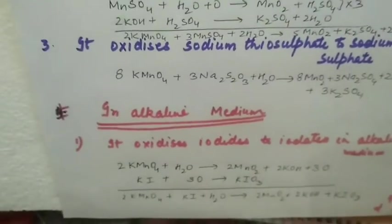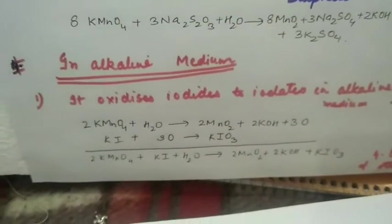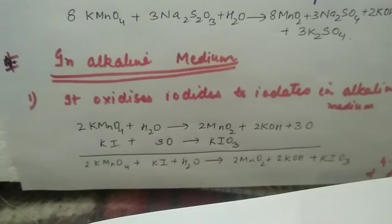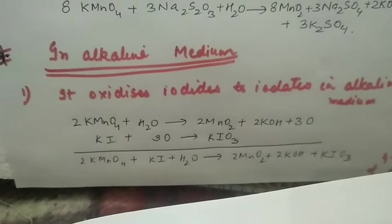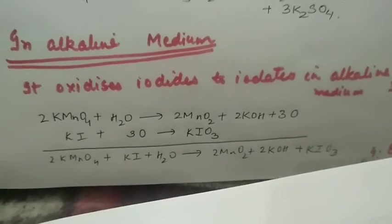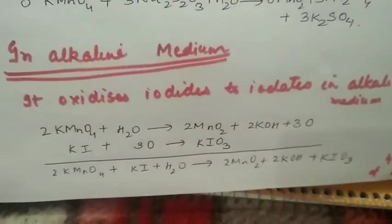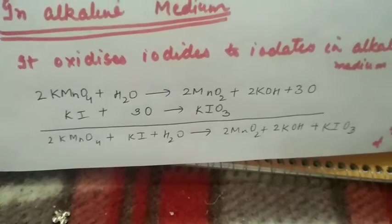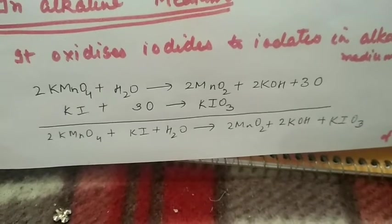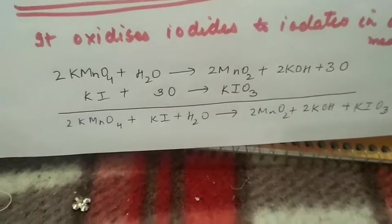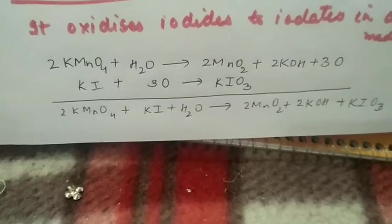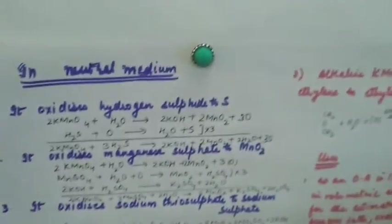In alkaline medium, potassium manganate forms first, and then later manganese dioxide forms - same as neutral reaction. But the important point is that iodides which were oxidized to iodine in acidic medium, in alkaline medium, instead of iodine, iodates are formed. KMnO4 plus water forms manganese dioxide, potassium hydroxide, and 3 nascent oxygens. These nascent oxygens oxidize potassium iodide to potassium iodate. This is a notable change in the reactions.